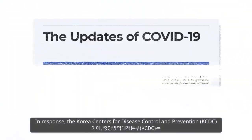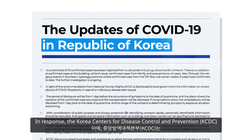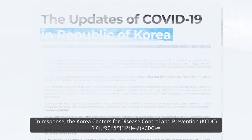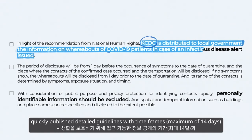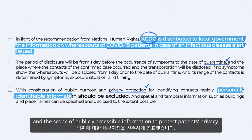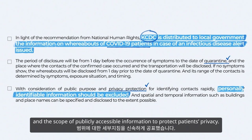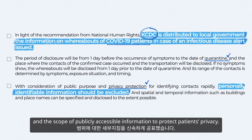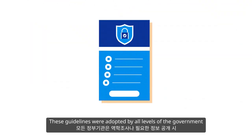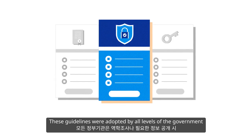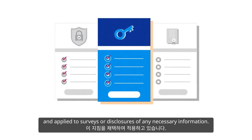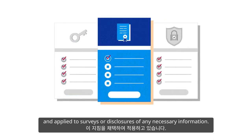In response, the Korea Centers for Disease Control and Prevention (KCDC) quickly published detailed guidelines with timeframes and the scope of publicly accessible information to protect patients' privacy. These guidelines were adopted by all levels of the government and applied to surveys or disclosures of any necessary information.